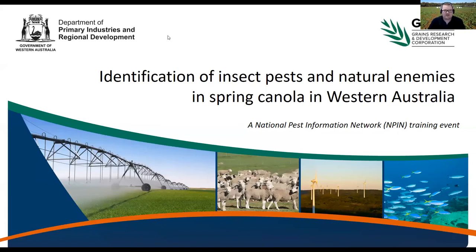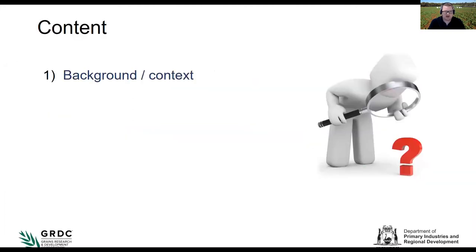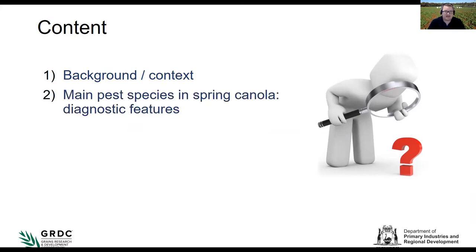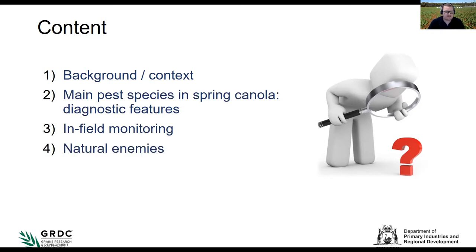Thanks everyone for joining us. This will probably be a refresher for people with experience in this area, but hopefully also helpful for those without much experience — covering what to look for in canola crops, what to be worried about, what natural enemies are, and how to protect the crop. The focus is background and context on pests and natural enemies in canola, particularly in the grain belt of WA, including how to detect and identify pests and make management decisions.